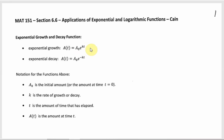As far as what the other symbolism means: A of t is the amount of whatever at time t. The most common application for exponential growth would be something like the growth of bacteria — that can be modeled pretty well with an exponential model. So A sub t would be the amount of bacteria after time t has elapsed. For decay, the most common application is probably the decay of a radioactive substance, so A of t would be the amount of the substance that's left after however much time has passed.